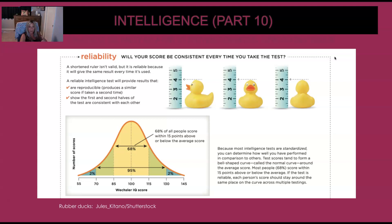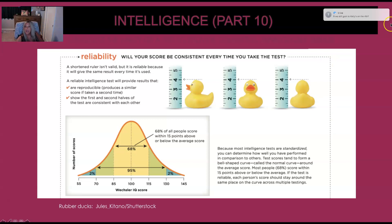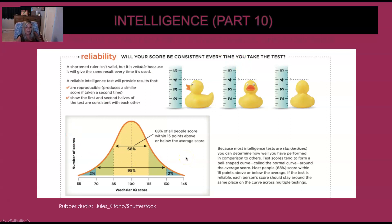Reliability means consistency — you will see this on a test. If you take the Myers-Briggs test, where it gives you four letters, and you take it today and then you take it two months from now, is it going to give you the same results over and over again? If it does, that's a reliable test because it's giving you consistent results. You always have to make sure that the test is also fair.